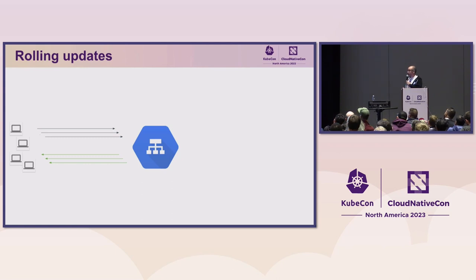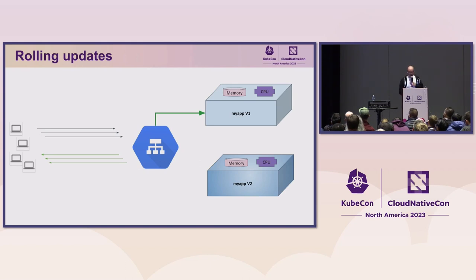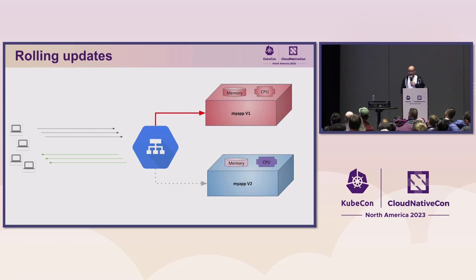One practical application of using health checks and detecting a dead application is implementing rolling updates. You have your application at version 1 and want to roll out version 2. You tell the load balancer to add the new backend into rotation but not yet forward traffic to it. When you stop version 1, the load balancer detects it's no longer available and makes version 2 available. From the client's perspective, this is transparent — rolling updates with zero disruption.